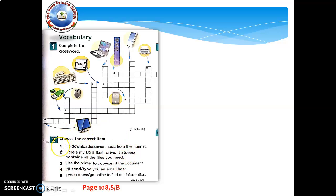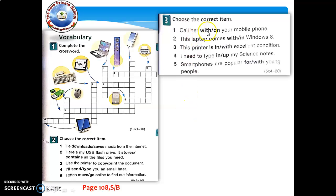And then number two: listen to me again as I choose answers. In number one, you have to choose first the correct item. Number one: he downloads or saves the music from the internet. We download from the internet, right? So downloads. Number two: here's my USB flash drive; it contains all the files you need. Number three: use the printer to print the document. Number four: I'll send you an email later. Number five: I often go online to find out information. Then here, number three. Number one: call her, circle or underline, call her on your mobile phone. Number two: this laptop comes with Windows 8. Number three: this printer is in excellent condition.